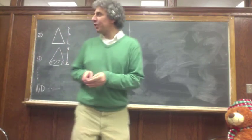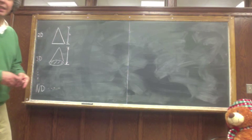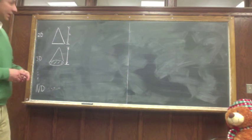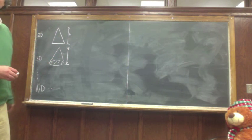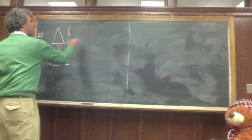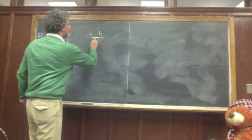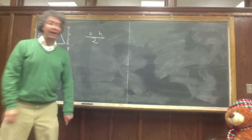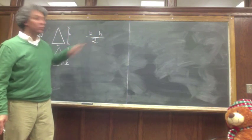I want to remind you we have done the n-dimensional pyramid. So in two dimensions the object was a triangle and it has a base and a height. The volume in 2D — I guess we call it area — is given by base times height divided by 2.